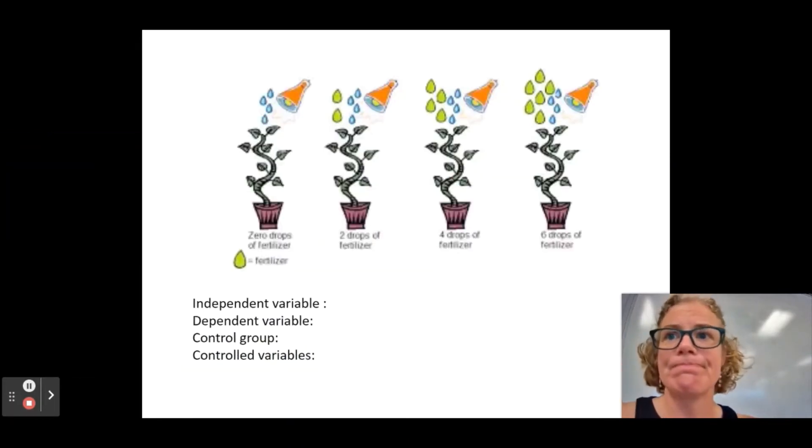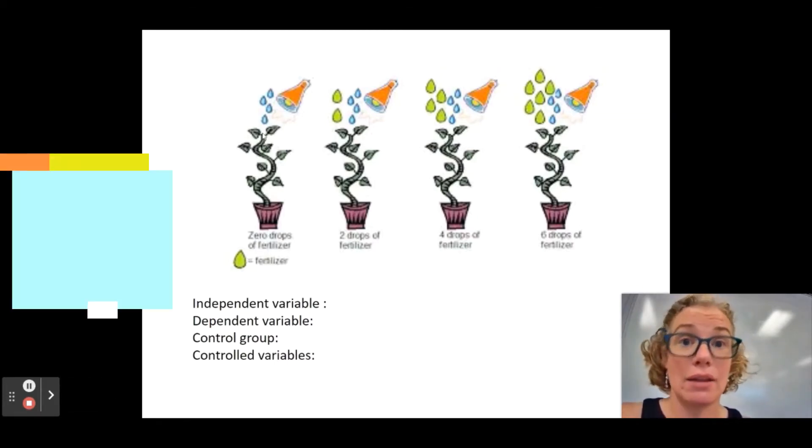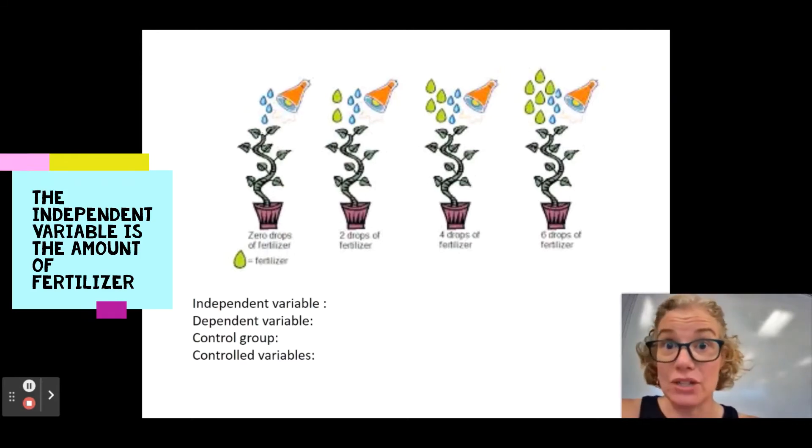Next one. Hmm. Independent variable. Well, I see one thing changing. I see these little green dots in these pictures that I don't see here. So that must mean the key tells me it's fertilizer. So I, I, the scientist, must be changing the amount of fertilizer. Okay? I'm increasing the amount of fertilizer. So that's my independent variable.